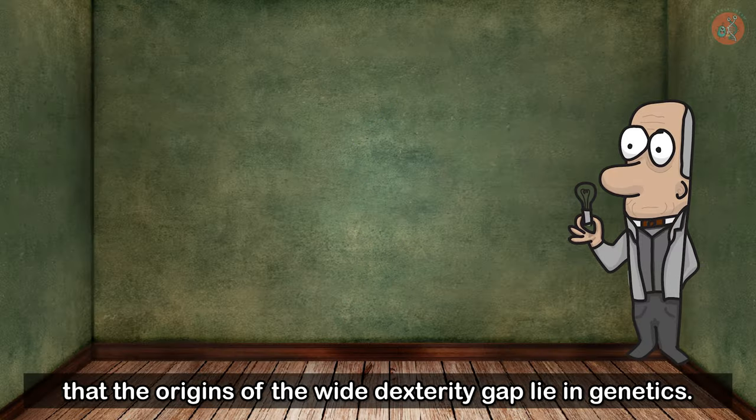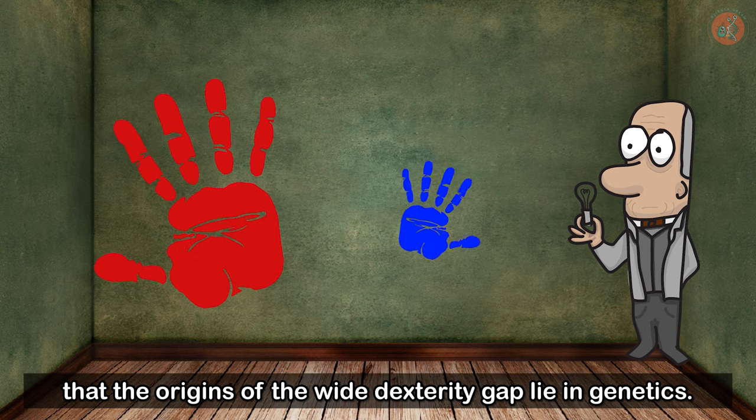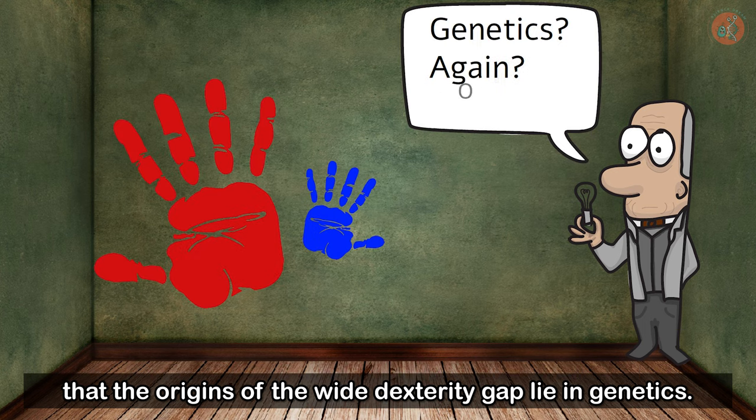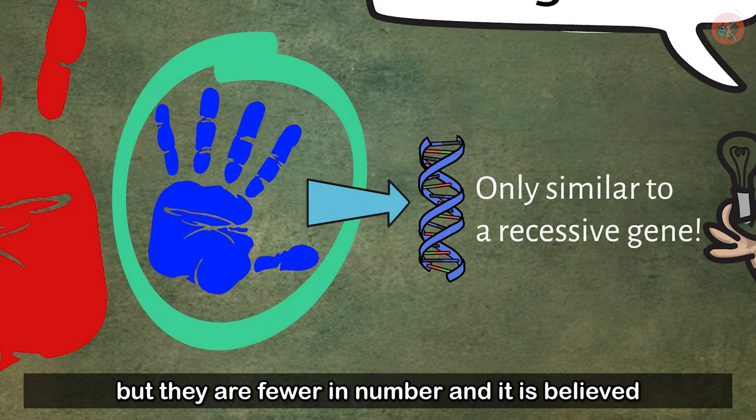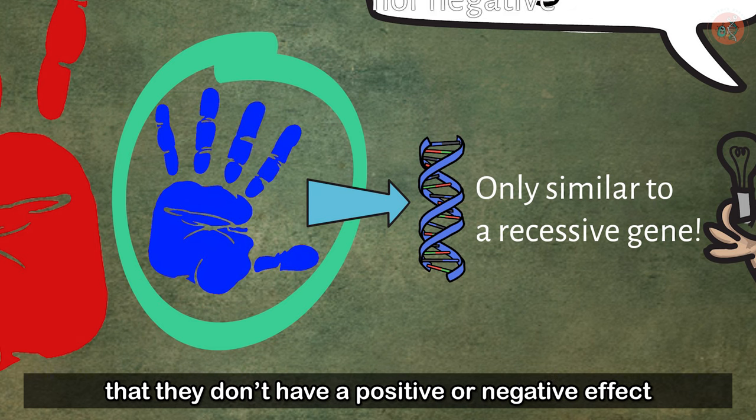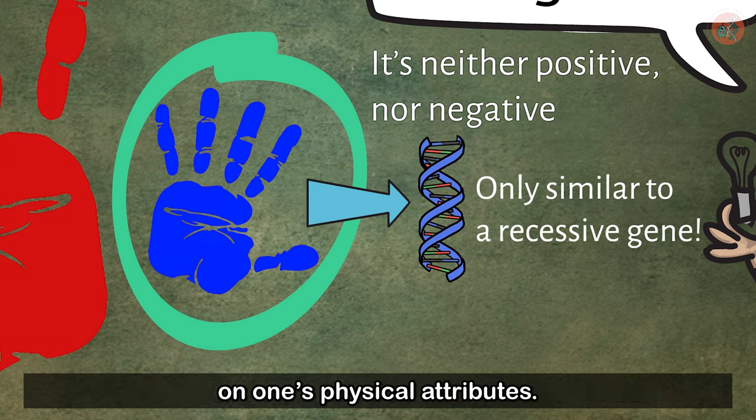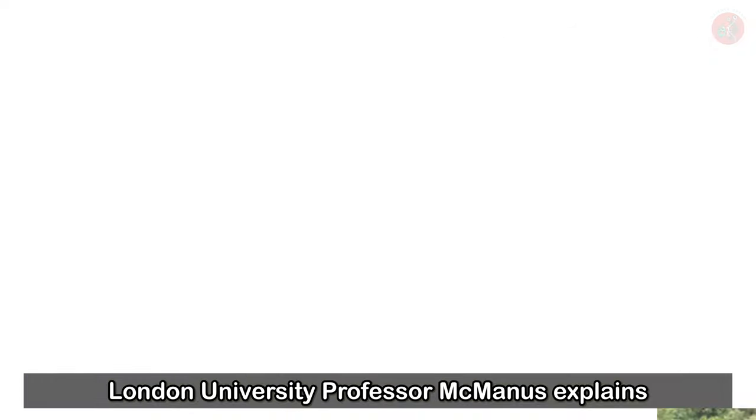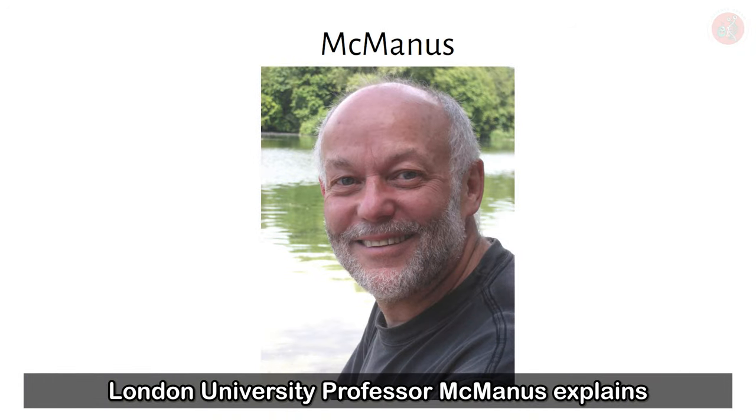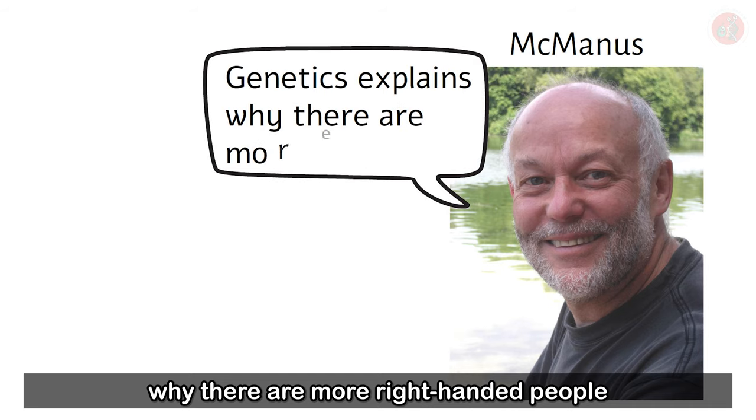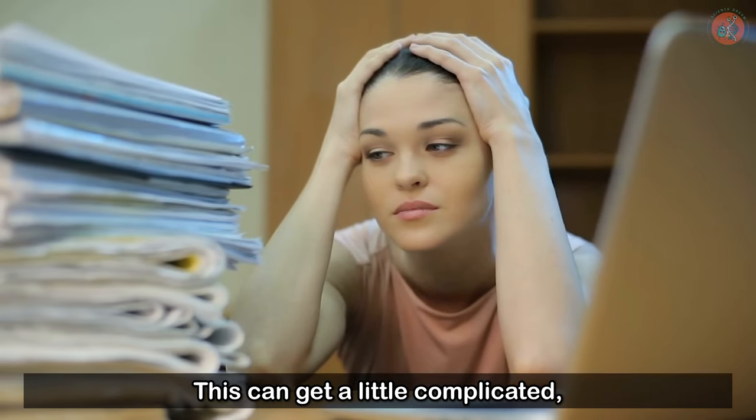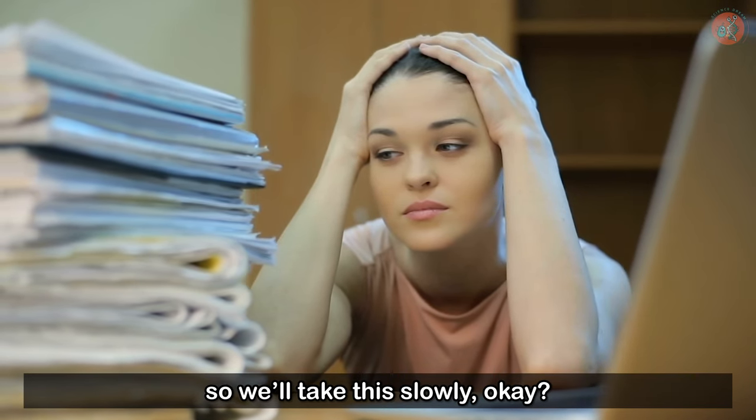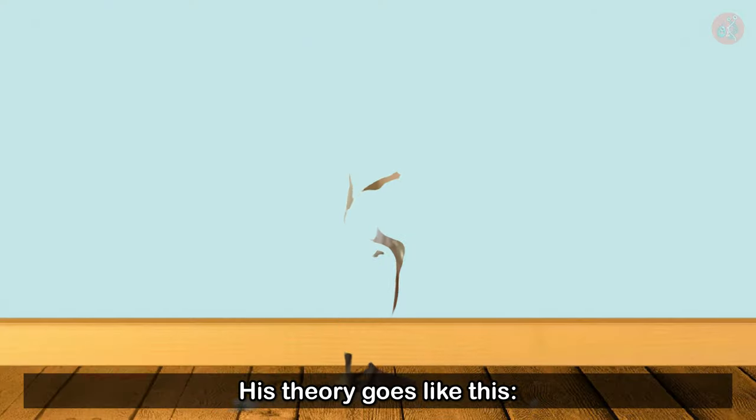Some scientists believe that the origins of the wide dexterity gap lie in genetics. The genes that code for left-handedness aren't recessive, but they are fewer in number. And it is believed that they don't have a positive or negative effect on one's physical attributes. London University Professor McManus explains why there are more right-handed people using the D gene hypothesis. This can get a little complicated, so we'll take it slowly, okay?